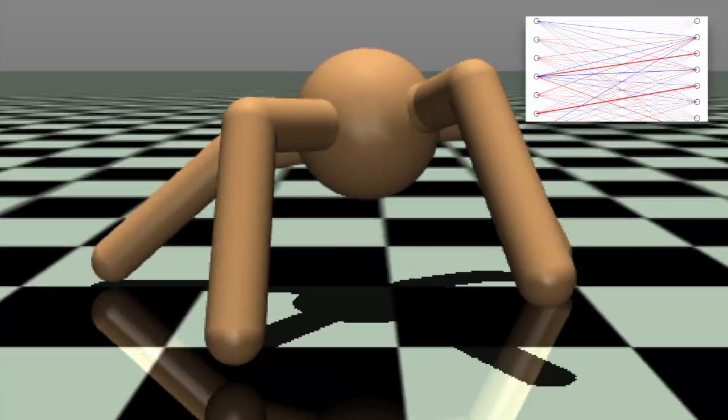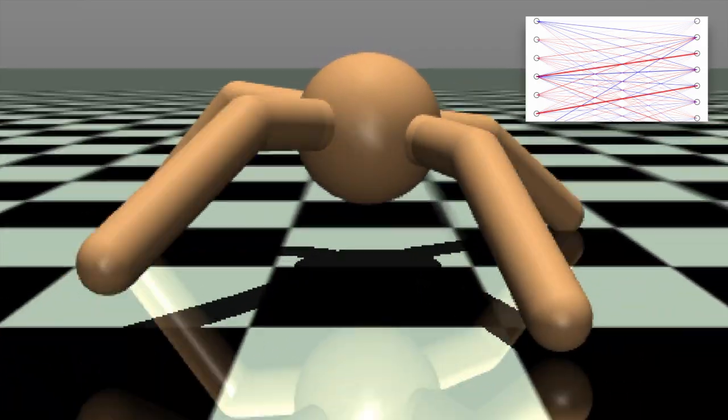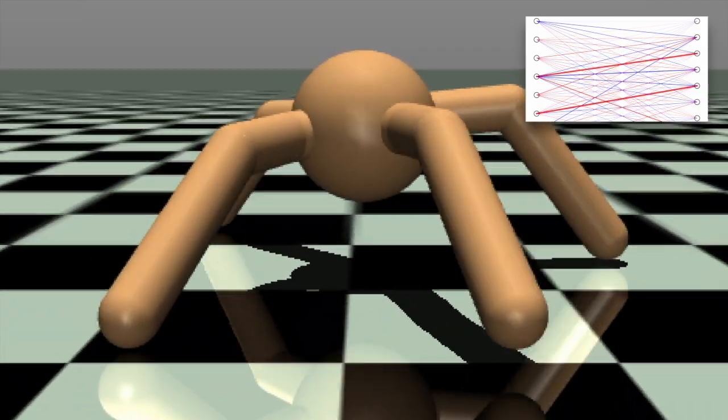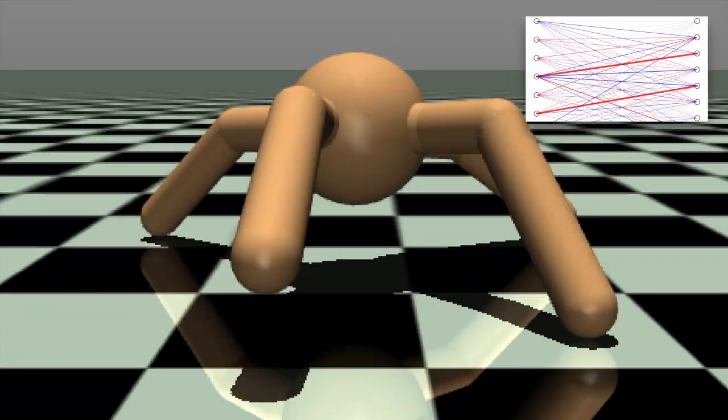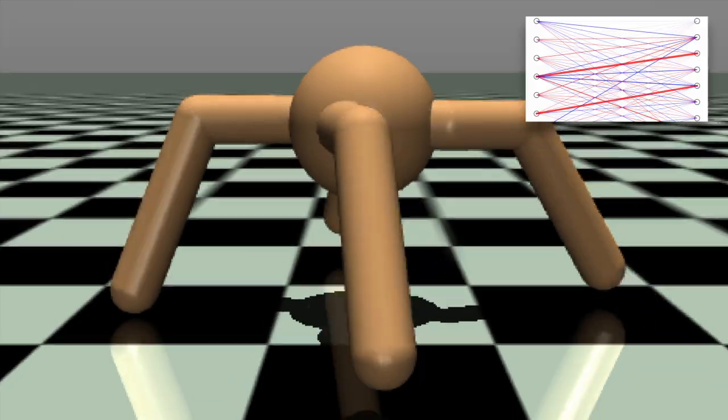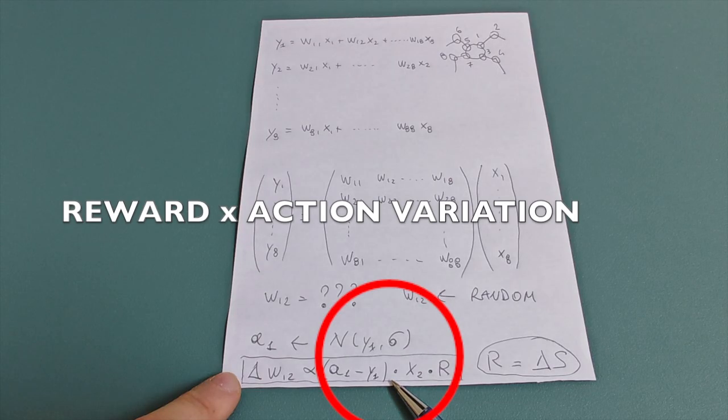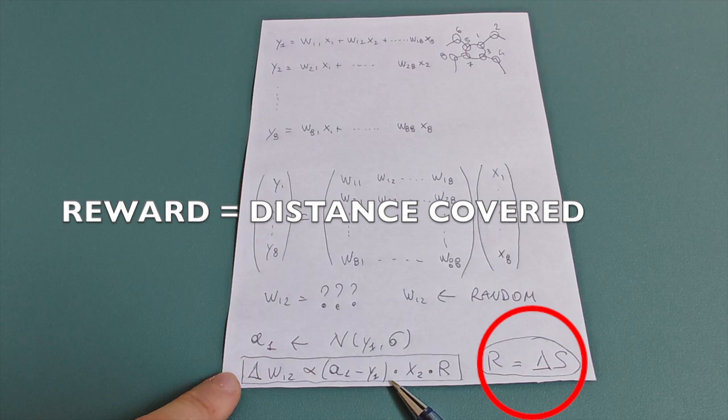The weights are initialized randomly at the beginning. Then, during training, we adjust these weights using the vanilla policy gradient method. This means we estimate how changing each weight affects the total reward, and we update them to increase the expected reward.